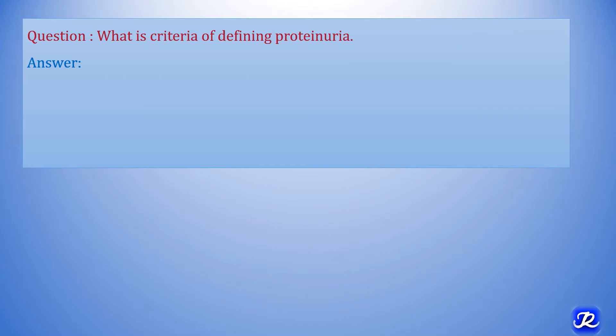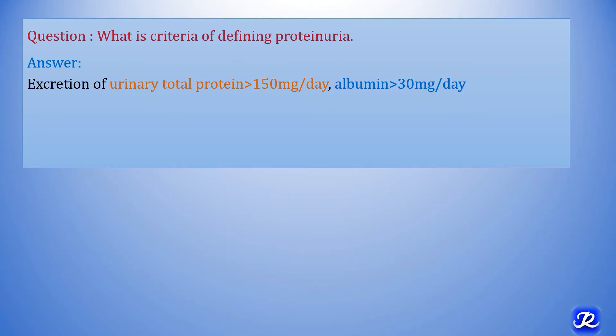What is the criteria for defining proteinuria? Excretion of less than 150 mg per day of protein and less than 30 mg per day of albumin is normal. If total urinary protein is more than 150 mg per day and albumin is more than 30 mg per day, then it is proteinuria.